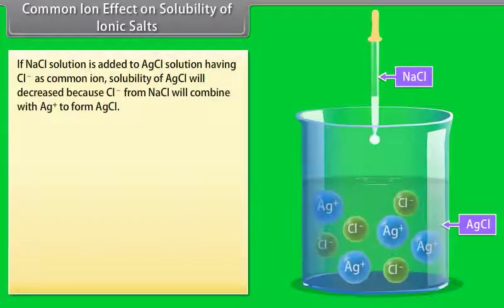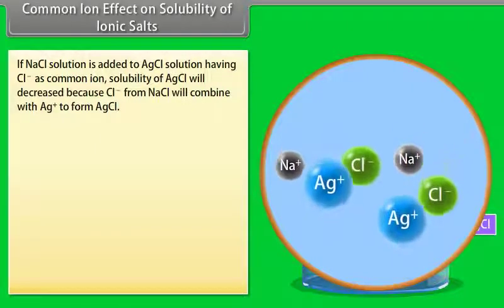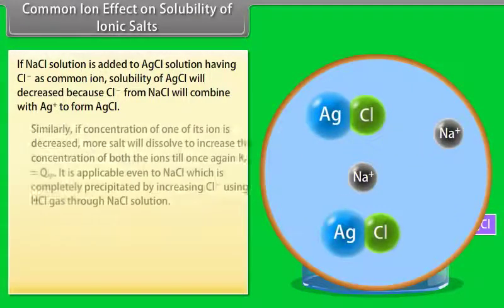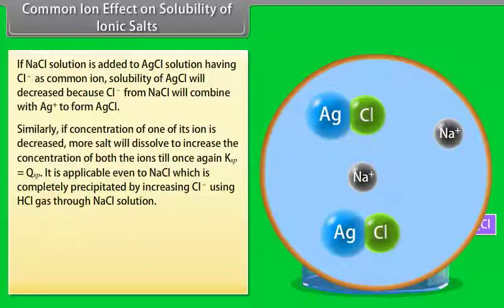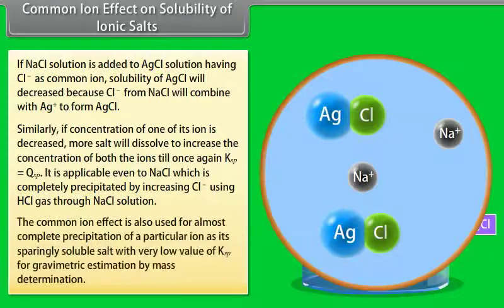Common ion effect on solubility of ionic salts: If NaCl solution is added to AgCl solution, the Cl⁻ as common ion causes the solubility of AgCl to decrease, because Cl⁻ from NaCl combines with Ag⁺ to form AgCl. If the concentration of one ion is decreased, more salt will dissolve until Ksp = Qsp. This is applicable even to NaCl, which is completely precipitated by increasing Cl⁻ using HCl gas. The common ion effect is used for almost complete precipitation of a particular ion as a sparingly soluble salt with very low Ksp for gravimetric estimation.